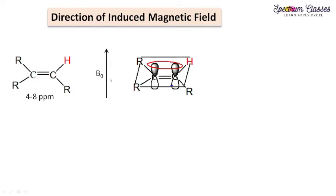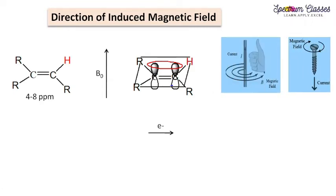Here we have the alkene molecule and this is the circulation of electrons. We are now looking at the direction in which this electronic circulation goes. Suppose the electrons are moving in this direction; the current will move in the opposite direction. So here the direction of current is this way in this molecule. This induced current can be explained by Fleming's right-hand rule. If the direction of current is in a certain direction in a current-carrying conductor, the magnetic field produced is according to the direction of the curled fingers.